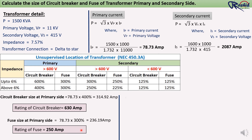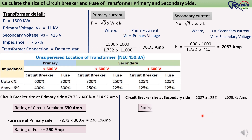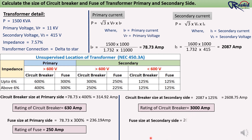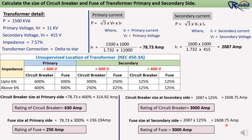Now we calculate the circuit breaker for the secondary side. Secondary current is 2087 A. We multiply by 125% as per this standard, giving 2608.75 ampere. The next bigger available circuit breaker size is 3000 ampere, so we will use a 3000 ampere circuit breaker at the secondary side. For the fuse, multiplying 125% by the secondary current also gives 2608.75 ampere, so we use a 3000 ampere fuse.